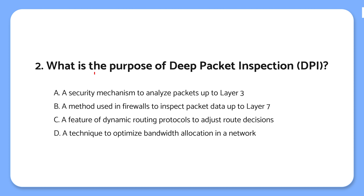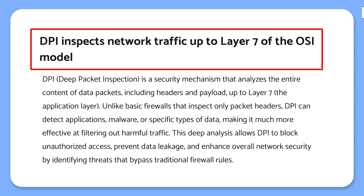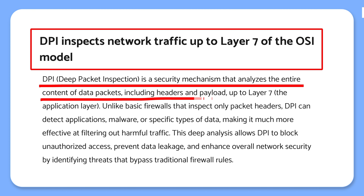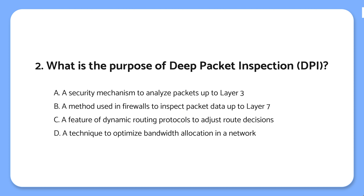Question 2: What is the purpose of Deep Packet Inspection? The knowledge point is that DPI inspects network traffic up to Layer 7 of the OSI model. DPI checks the actual content of data packets, not just the headers. It can look deep into the packet to see what's really inside, helping to block harmful traffic like malware and making your network more secure. The correct answer is: DPI goes beyond basic packet inspection and checks everything inside a packet, including data at the application layer, helping to detect threats and unwanted traffic.